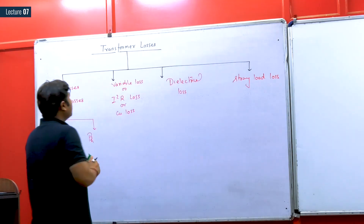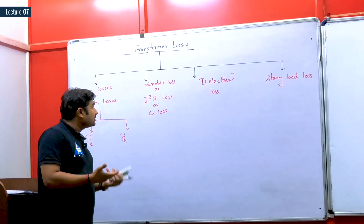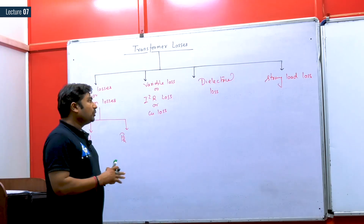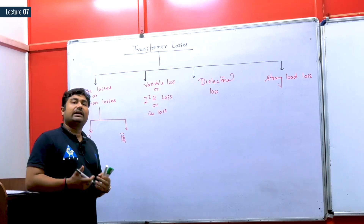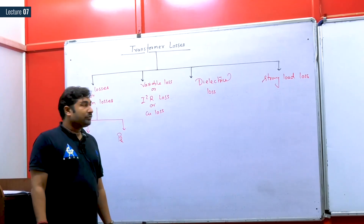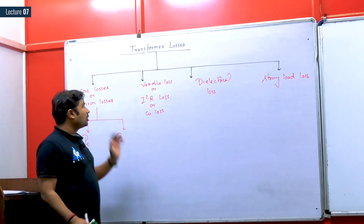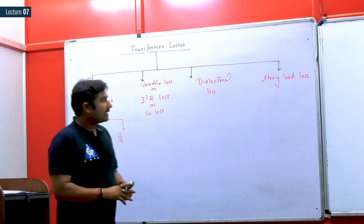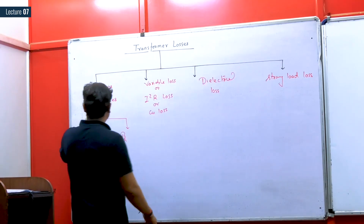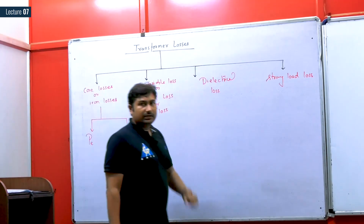Basically, four losses occur in the transformer. We want to know what factors these losses depend on and how to minimize them so that we can make transformer efficiency as maximum as possible. The four losses are: eddy current loss, hysteresis loss (as core loss), variable loss, dielectric loss, and stray load loss. We will first discuss core loss — that is iron losses — then proceed to the others.